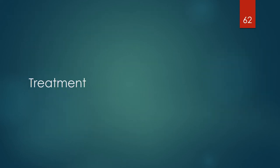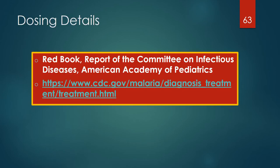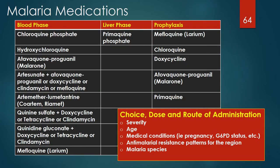Dosing details are complex and beyond the scope of this session; for more information refer to the Red Book, the Committee on Infectious Diseases of the American Academy of Pediatrics, and the CDC Malaria Treatment Guidelines. Commonly used medications for treating malaria: all medications treat the blood phase except primaquine, which focuses on the latent hypnozoite phase in the liver for vivax and ovale. Blood phase medications include chloroquine, hydroxychloroquine, amodiaquine, atovaquone-proguanil (Malarone), artesunate, doxycycline, tetracycline, clindamycin, artemether-lumefantrine (Coartem/Riamet), quinine, quinidine, and mefloquine.